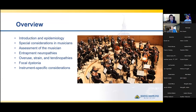I'm going to touch on a quick introduction in epidemiology of injuries in musicians, then talk about special considerations in musicians and what makes this patient group a bit more special to treat. We'll talk about the assessment of the musician from both a history and physical exam standpoint, and then touch on some of the major pathologies affecting musicians, which will include the various entrapment neuropathies, overuse, strain and tendinopathies, and a very specific and unique pathology called focal dystonia. And then I'll touch briefly on instrument-specific considerations in the various types of instruments, because there's a large heterogeneity between string versus percussion versus woodwind and brass.